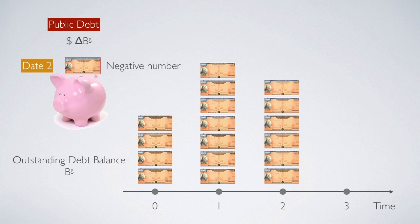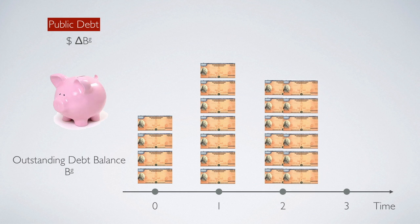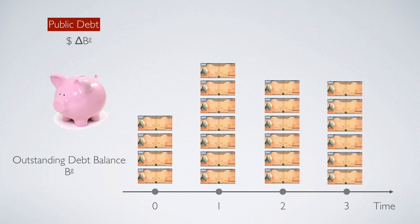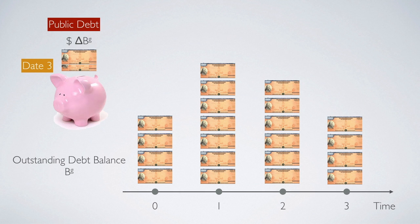When we roll over the debt to day 3, on day 3 government can decide to do something further regarding the debt. For example, government can decide to retire — pay back an extra 2 units of government bonds. In this case, by the end of day 3, the outstanding balance is only 4 units of government bonds. Therefore, we know that on day 3, the change of public debt delta BG is a negative number, which is equivalent to negative 2 units of debt.